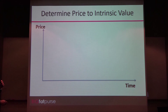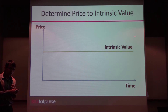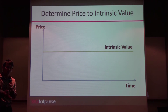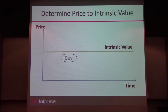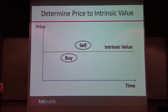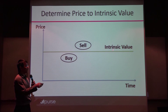Now we need to find this intrinsic value. Instead of NAV or CNAF, now we have intrinsic value, calculated using the discounted method. I'll show you how to calculate this intrinsic value. You buy below the intrinsic value, and you sell above the intrinsic value. So this is the concept — we need to find out how to get this intrinsic value.